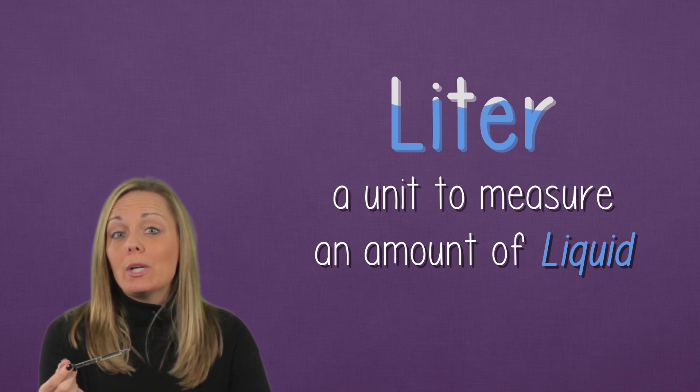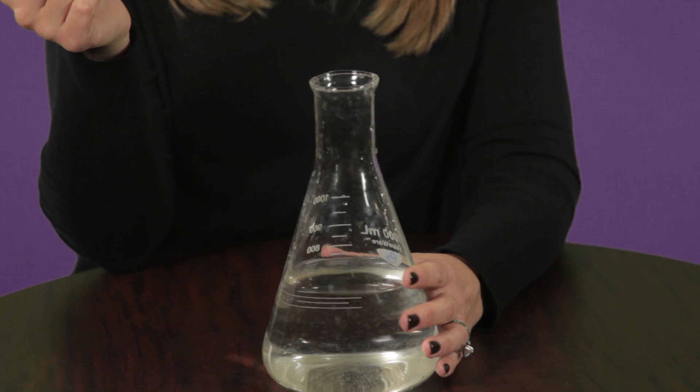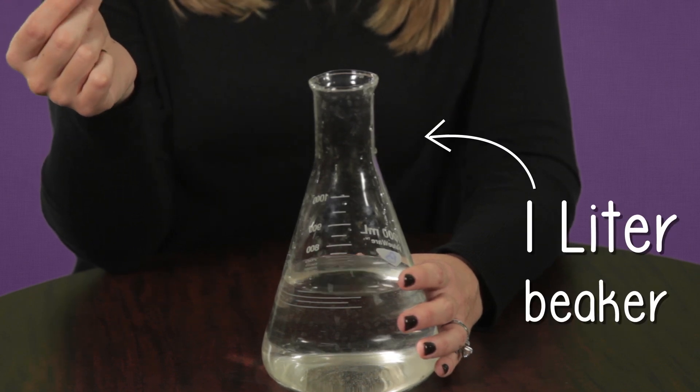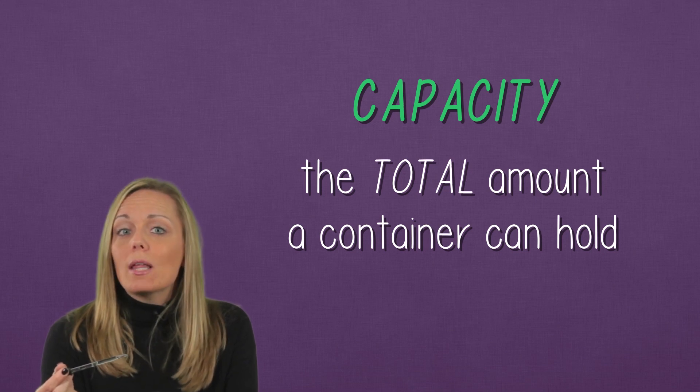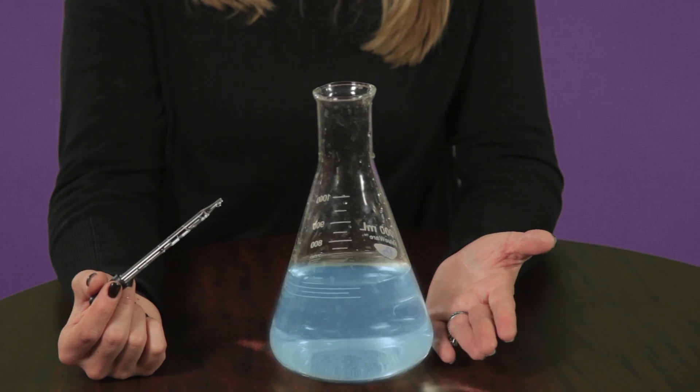How about we see if I can decompose one liter? A liter is a unit used to measure an amount of liquid. This is a 1 liter beaker. Its capacity is 1 liter. Capacity means the total amount it can hold. Right now, it's filled about half way.